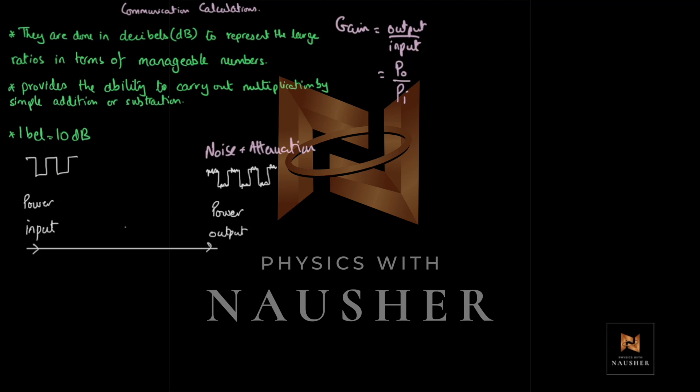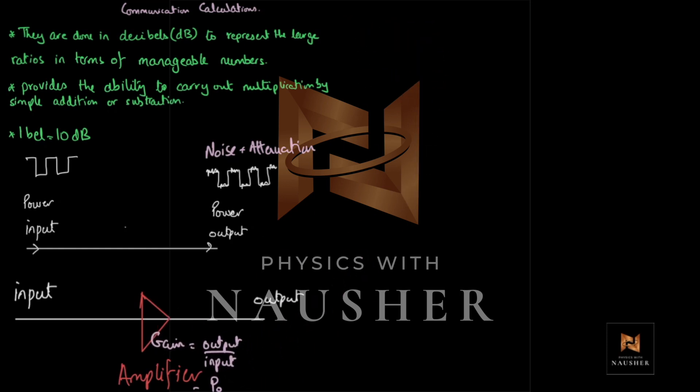So to manage that noise and that attenuation, what we do is, we add an amplifier in our line. So between the input and the output, you put an amplifier, and this amplifier provides the gain. Amplifier provides you gain. You use amplifiers to boost signals. It's just like when you're on the motorway, it's almost 400 kilometers from Lahore to Islamabad.